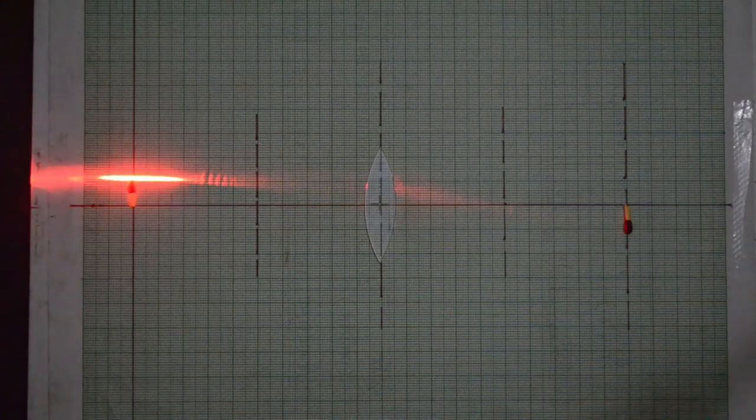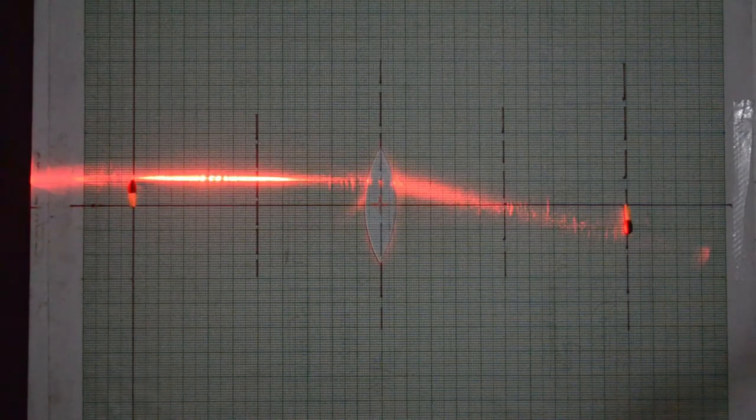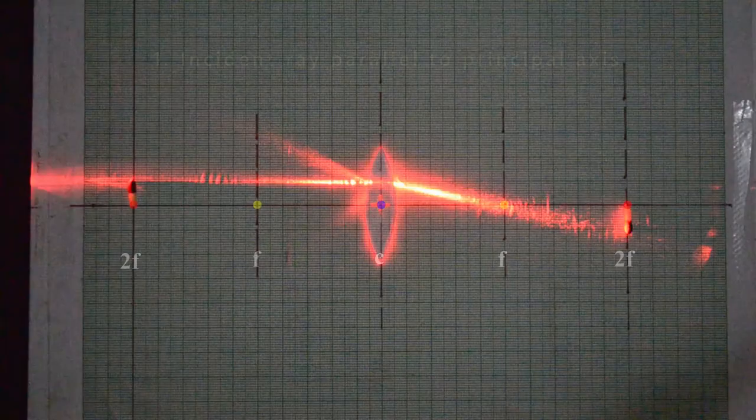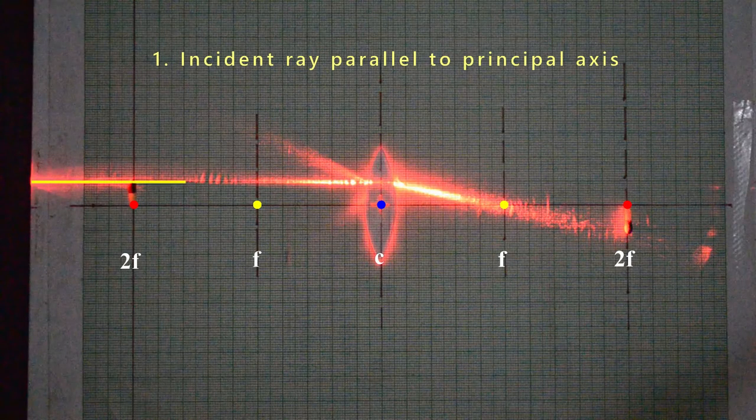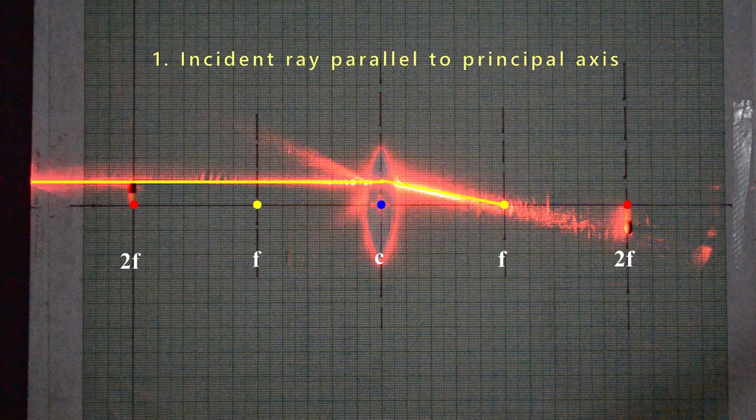We can visualize three rules of refraction for a bi-convex lens. As per the first rule, any incident ray traveling parallel to the principal axis of a converging lens will refract through the lens and travel through the focal point on the opposite side of the lens.